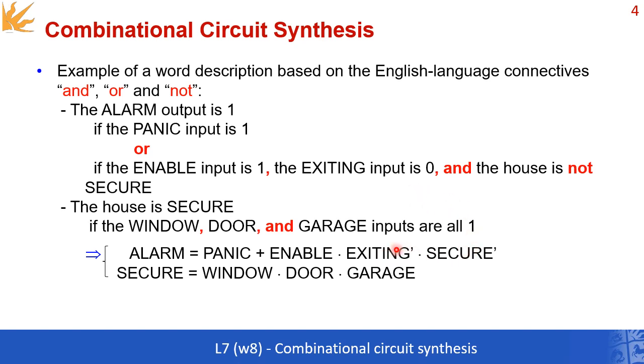Now pay attention: we're using a dash for the EXITING because in the textual description you see that the EXITING input is expected to be 0. As for the SECURE variable, well it's given in a different way. Instead of saying that the input should be 0, it says that the house is not secure, which is more explicit. Now what does SECURE mean? It means that the WINDOW and the DOOR and the GARAGE are all 1.